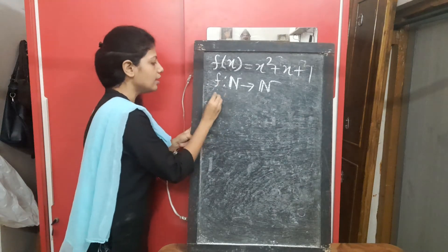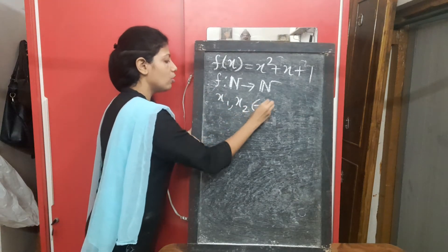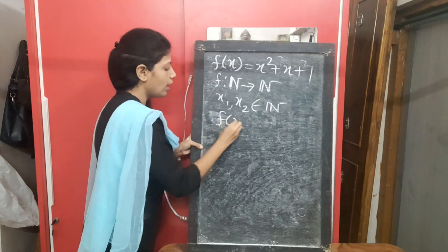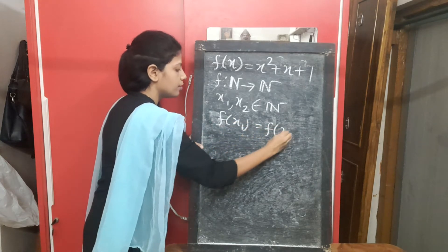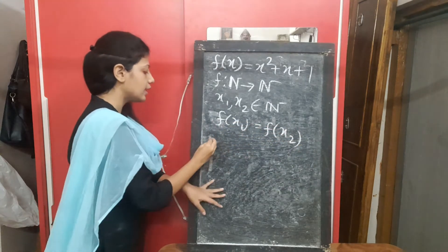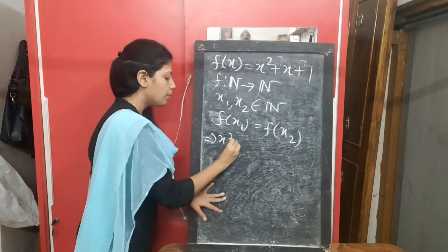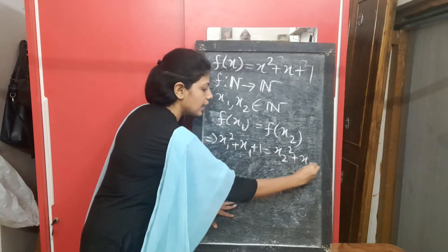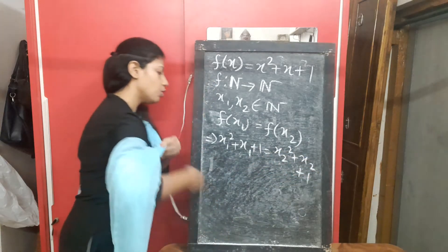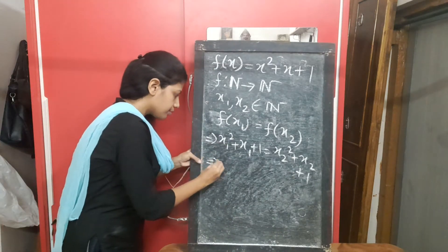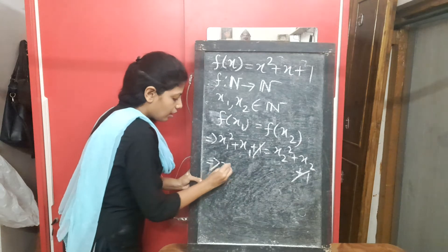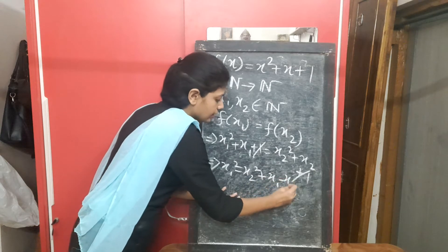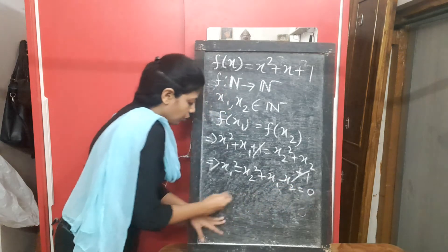So first I will start. Let x1, x2 belong to ℕ, meaning natural numbers. We can write f(x1) = f(x2), and from here we can say that x1² + x1 + 1 = x2² + x2 + 1. So after that we can write x1² - x2² + x1 - x2 = 0.